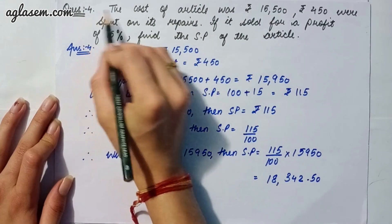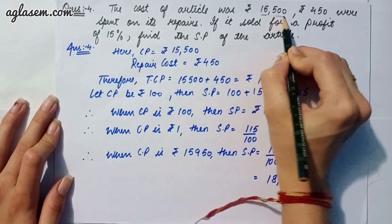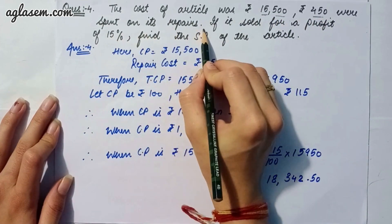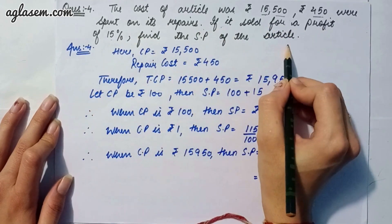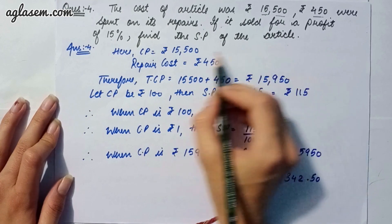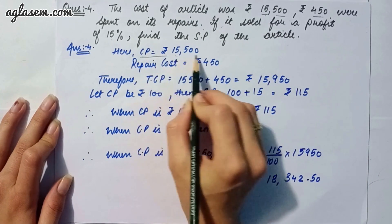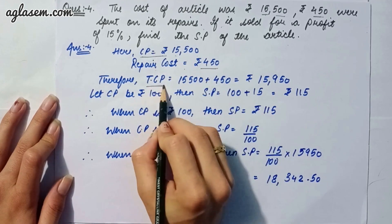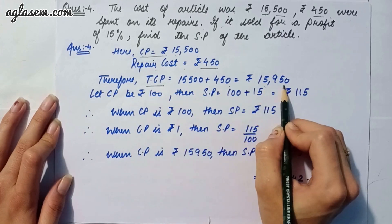Moving to the fourth question: the cost of an article was rupees 15500 and rupees 450 were spent on its repair. If it is sold for a profit of 15 percent, we have to find the selling price. The cost price is 15500 and the repairing cost is 450, so total cost price is 15500 plus 450, giving rupees 15950.